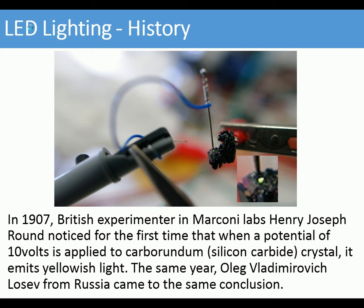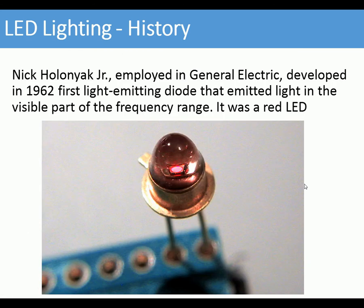In 1907, British experimenter at Marconi Labs, Henry Joseph Round, noticed that when a potential of 10 volts was applied to a carborundum crystal, it emitted a yellowy light. In the same year, Oleg Vladimirovich Losev from Russia came to the same conclusion. In 1962, Nick Holonyak Jr., employed at General Electric, developed the first LED — light emitting diode — that emitted light in the visible part of the frequency range. It was a red LED.